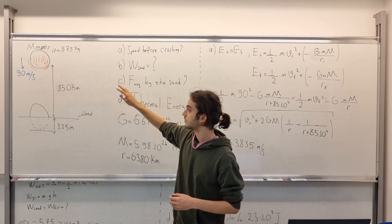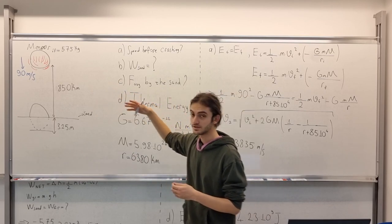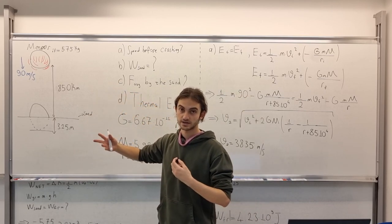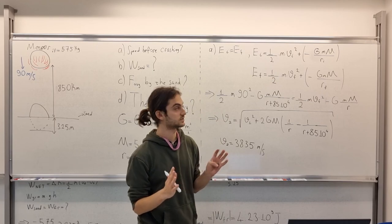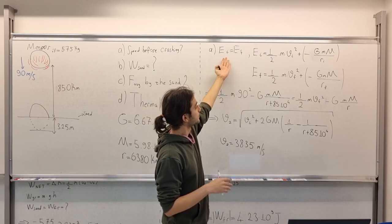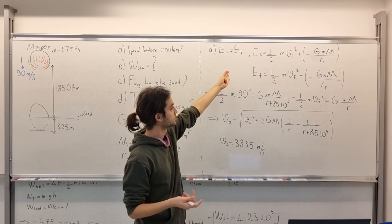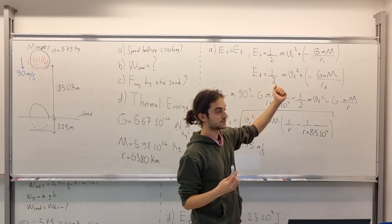For option A, we have our initial energy and final energy that we're just going to equalize them. As you can write as an equation. We have our initial energy, which is the kinetic energy and the potential energy.